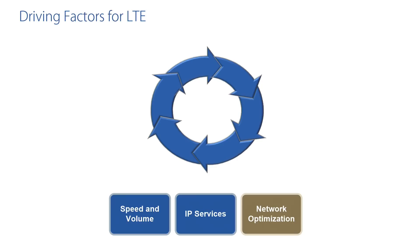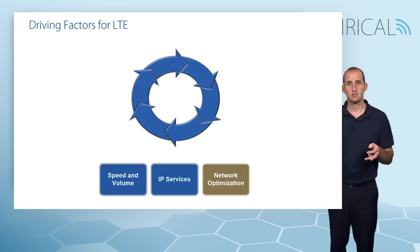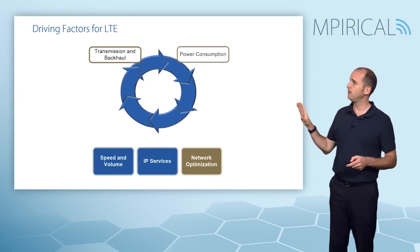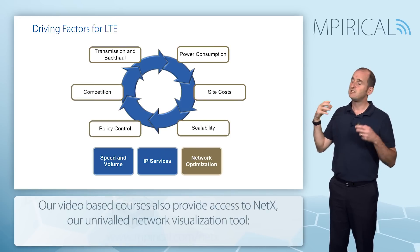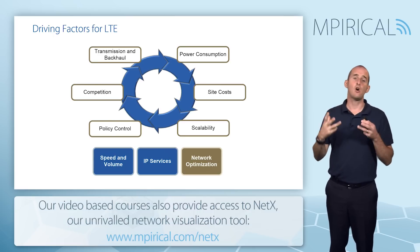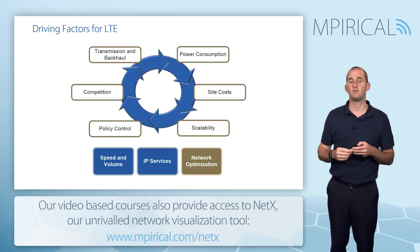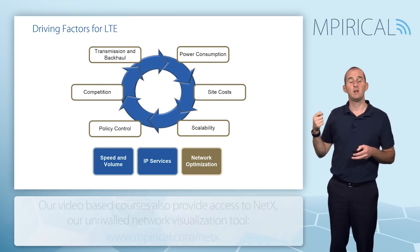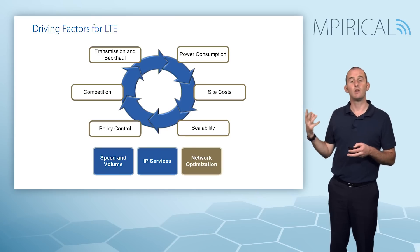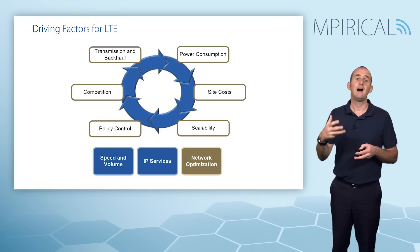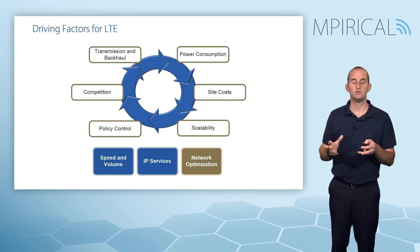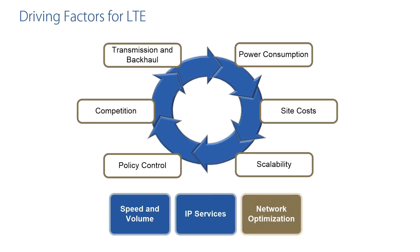The final driving factor we'll briefly discuss is network optimization. As you can see from the diagram, LTE affects the network in many different areas, and these can ultimately lead to cost savings for the service provider — whether it's optimizing how traffic is transported around the network, or optimizing from a policy control perspective how network resources are used. All of these have a positive influence on network optimization.